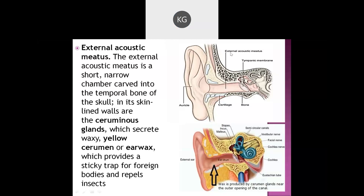The external acoustic meatus is short and they are a small chamber. They are curved into the temporal bone — I hope you remember the temporal bone. It is located at the side of your head.